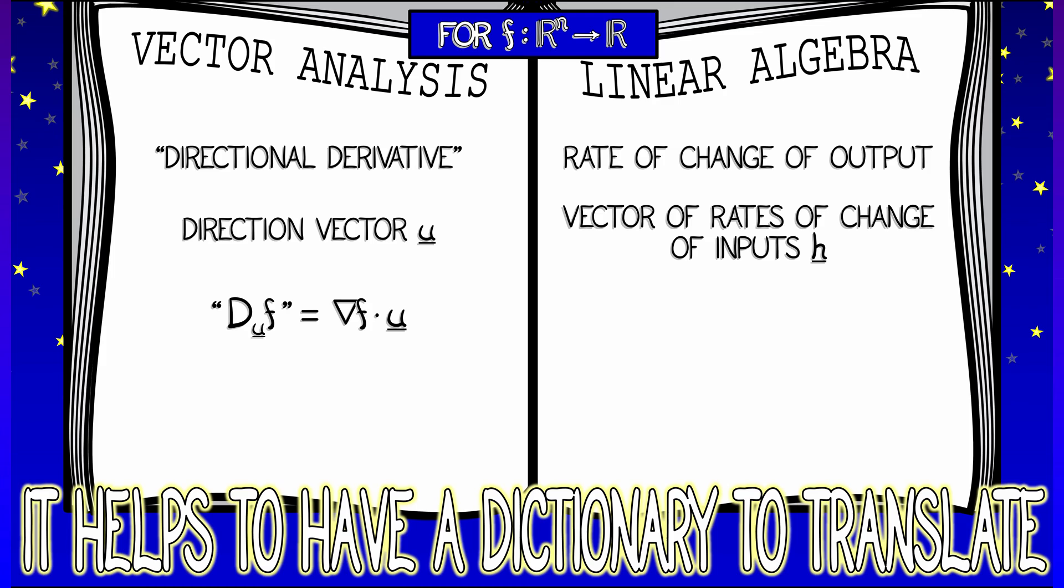The directional derivative, defined in terms of a dot product between the gradient and u—what does that mean? Oh, this is really just the linear transformation df applied to this vector h of rates of change.